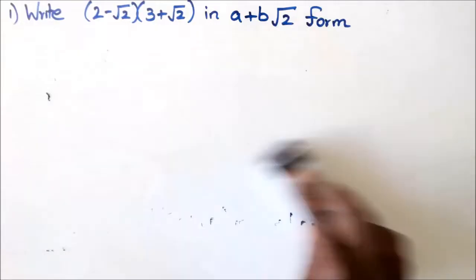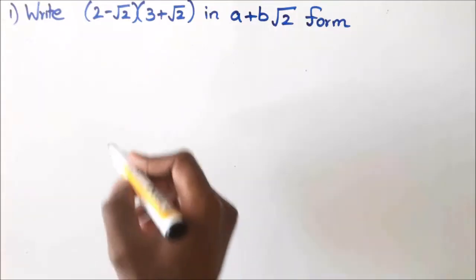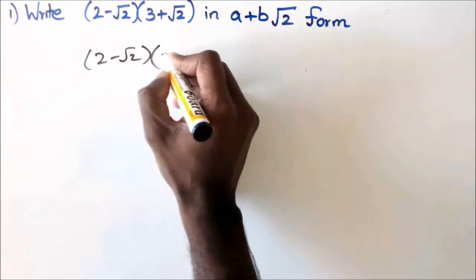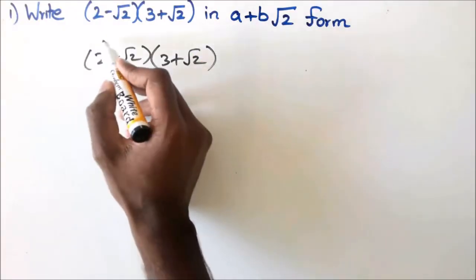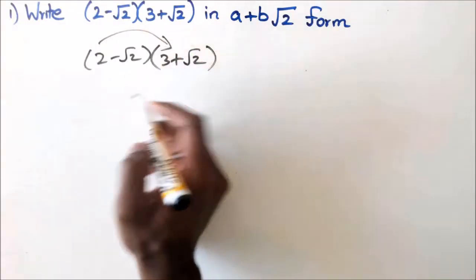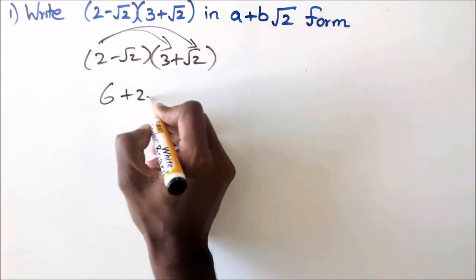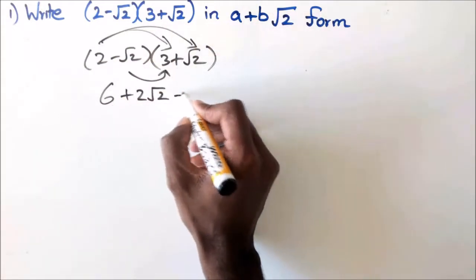With the first one, you've been asked to write it in a plus b√2 form. It's basically just your normal routine — just like working with a quadratic. So you've got 2 and 3 is 6, 2 and √2 is 2√2, and then here you've got minus 3√2.